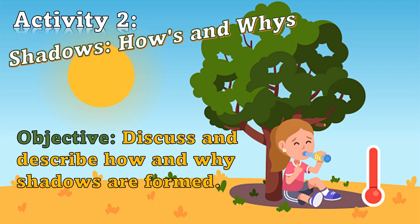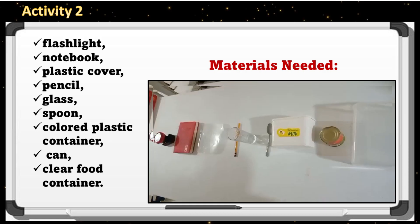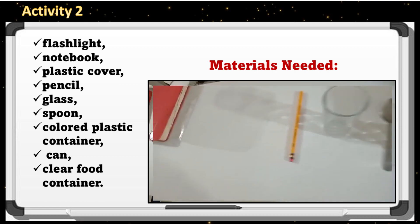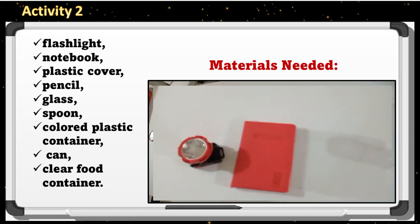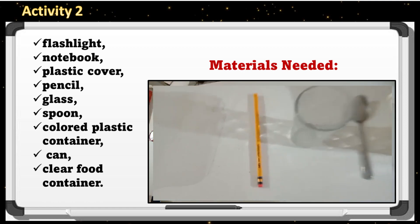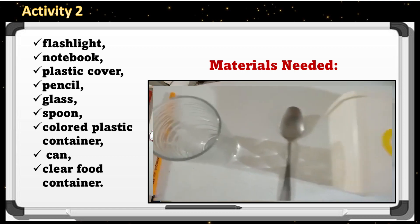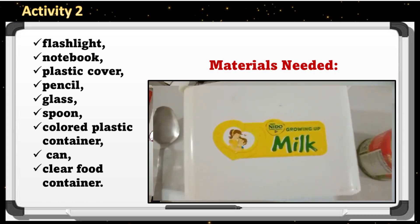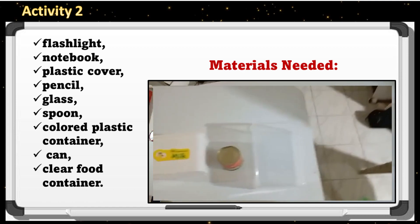Now let us proceed to activity number two: Shadows, Hows and Whys. In this activity, we will discuss and describe how and why shadows are formed. Materials needed: flashlight, notebook, plastic cover, pencil, glass, spoon, colored plastic container, can, and clear food container.